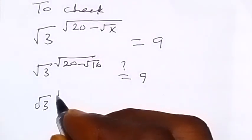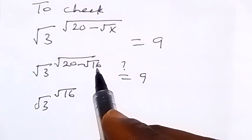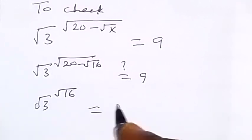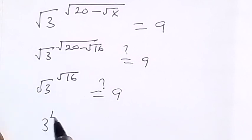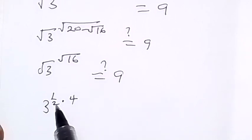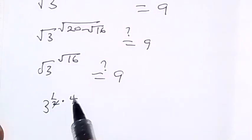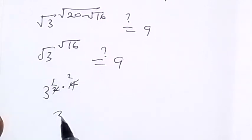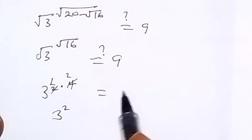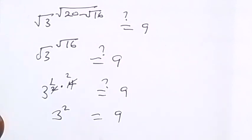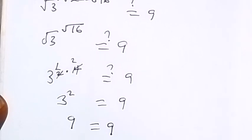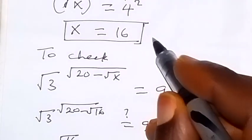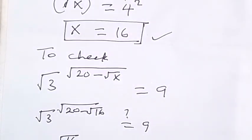So we have root 3 raised to power 16, which is root 16, giving us 4. We write root 3 as 3 raised to power half, then multiply by 4, giving us 3 raised to power 2, which gives us 9. So 3 squared is 9, and 9 equals 9. Therefore we conclude that x equals 16. Thank you for watching — also subscribe to this channel for more videos, see you in the next class!